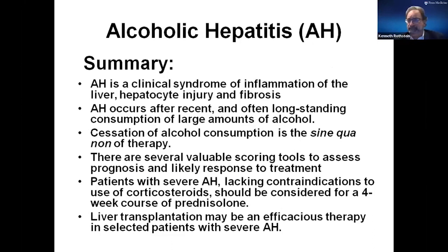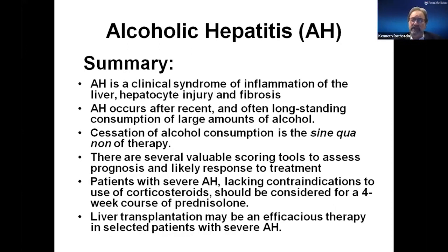To summarize: this is a clinical syndrome of inflammation of the liver with a lot of injury and fibrosis. You need longstanding alcoholic hepatitis — a couple of weeks of drinking will not do it; it takes years of chronic excessive alcohol use. You have to stop drinking to have long-term survival. We have ways to figure out who's sick and who needs treatment. We put patients on a four-week course of steroids, but know within a week if they'll respond. And we now accept that transplant may be an acceptable therapy for select patients with severe alcoholic hepatitis who do not respond to steroids.